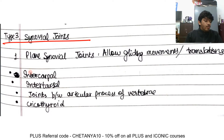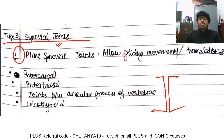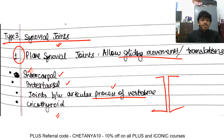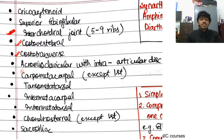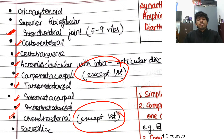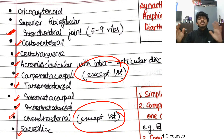Type three is synovial joints. The first subtype is plane synovial joints, where articulating surfaces are flat, allowing only gliding movements. Examples include intercarpal, intertarsal, joints between articular processes of vertebrae (zygapophyseal joints), and the cricothyroid joint. Additional examples include interchondral, costovertebral, costotransverse, acromioclavicular, carpometacarpal (except the first), tarsometatarsal, intermetacarpal, intermetatarsal, chondrosternal (except the first), and the sacroiliac joint.